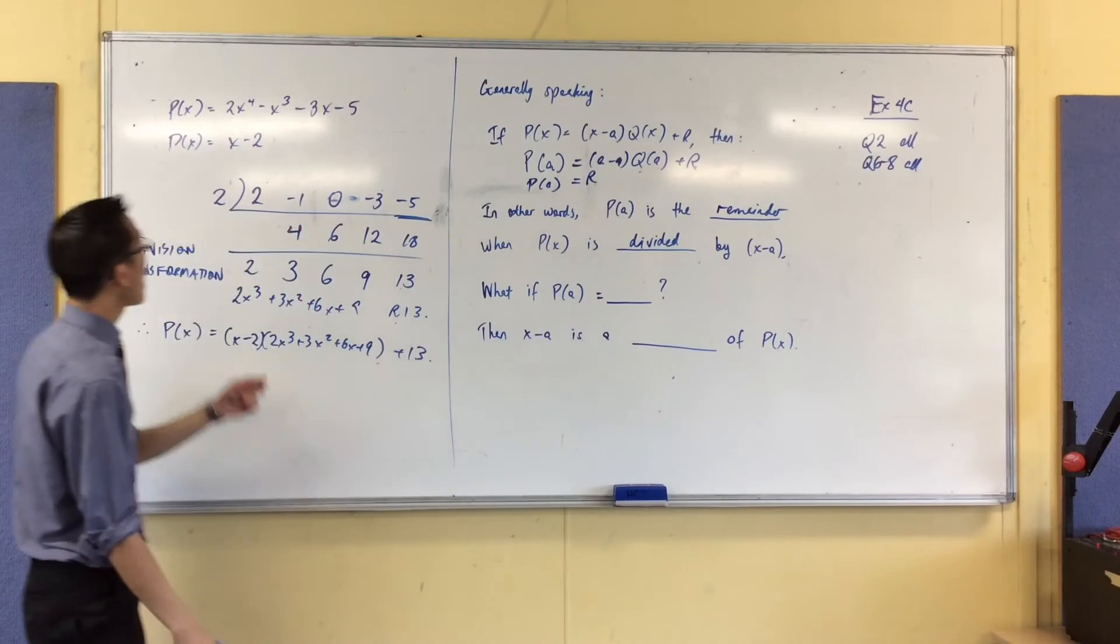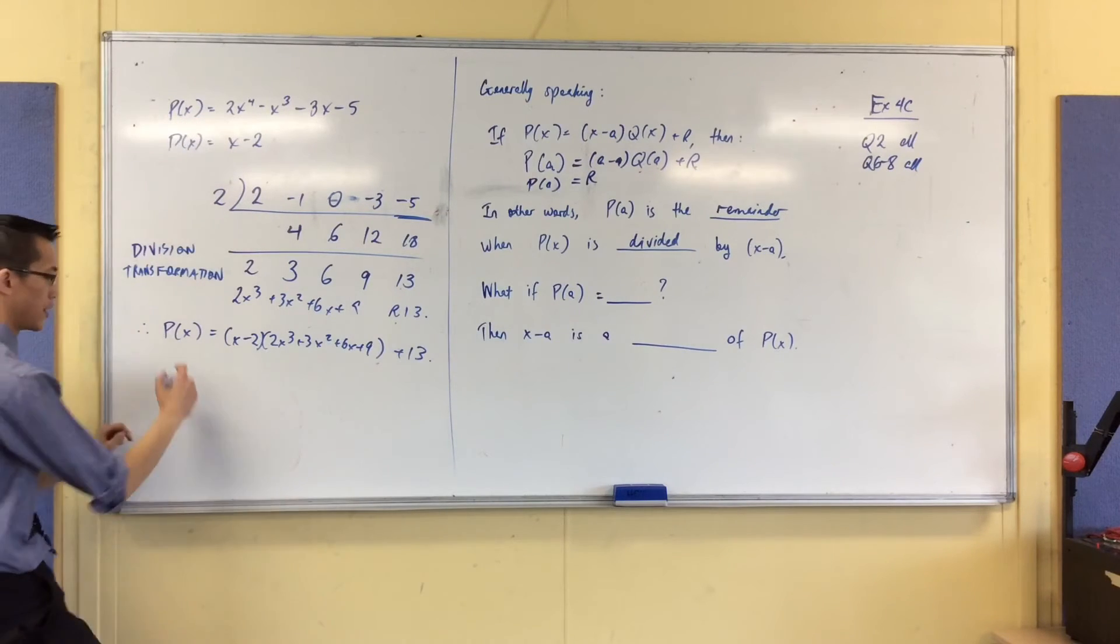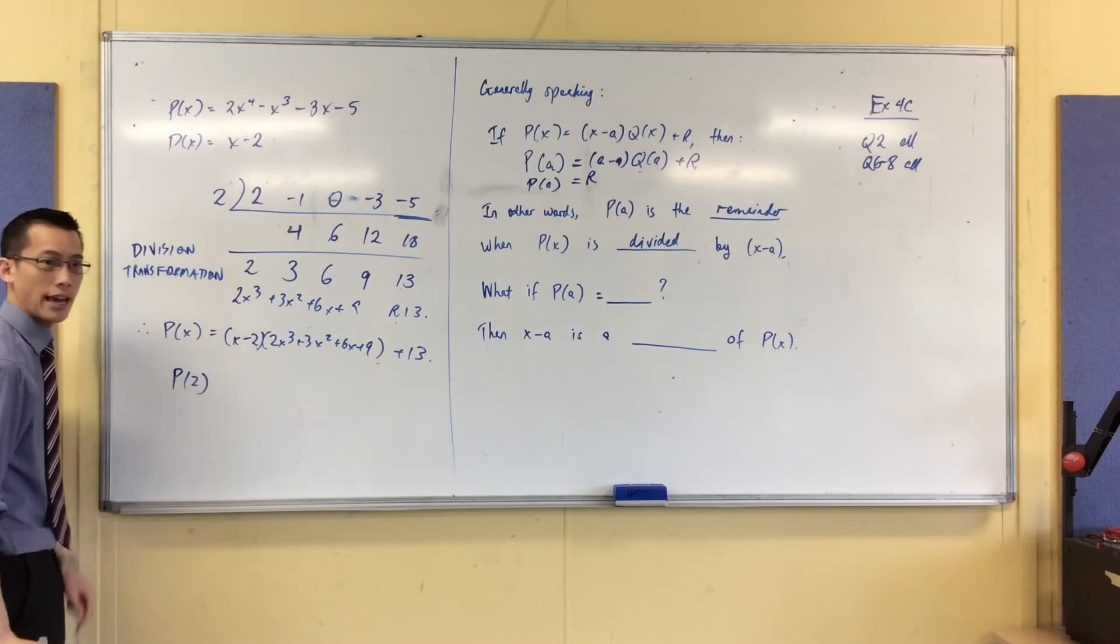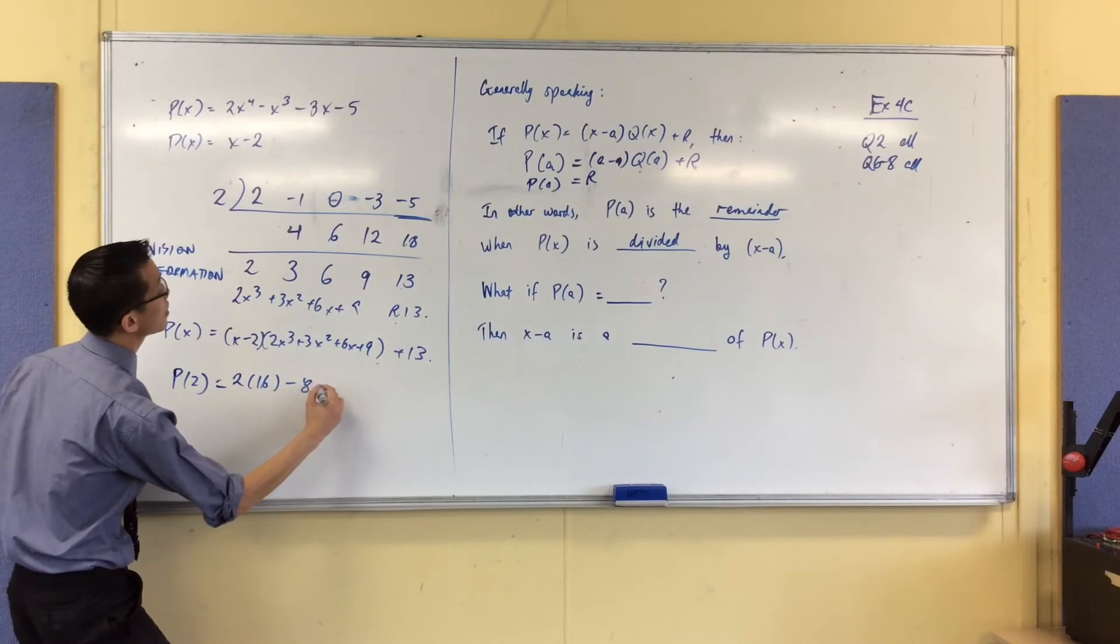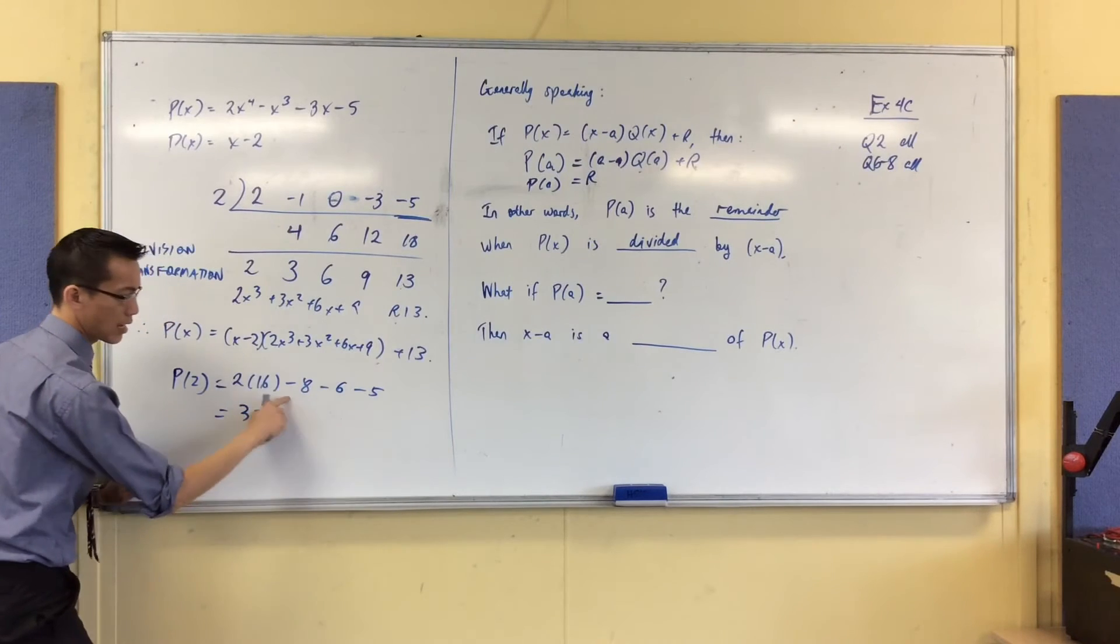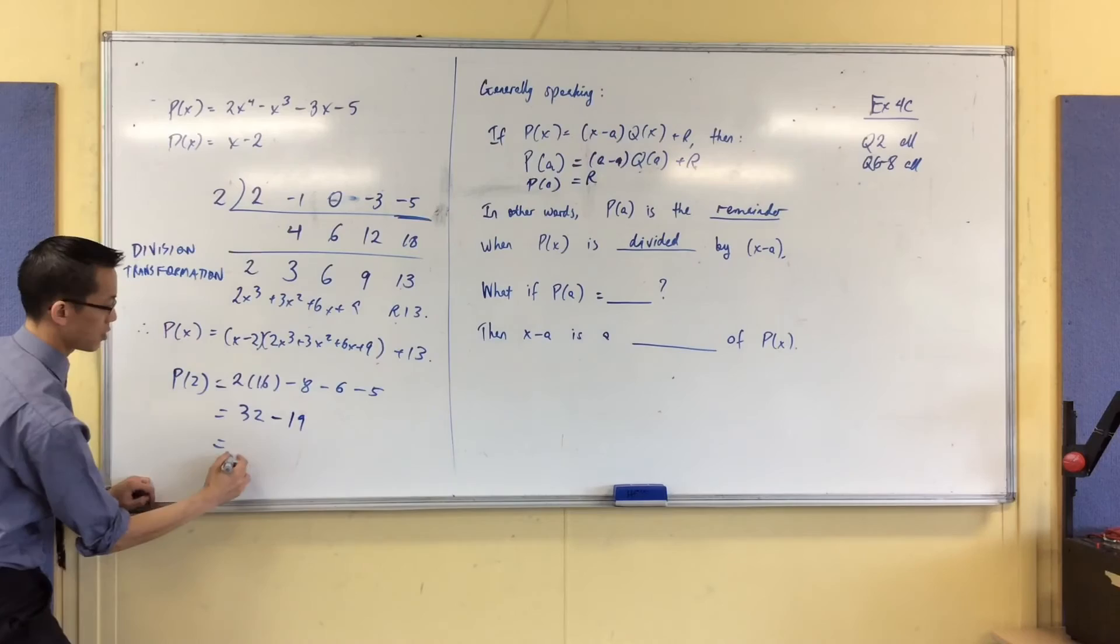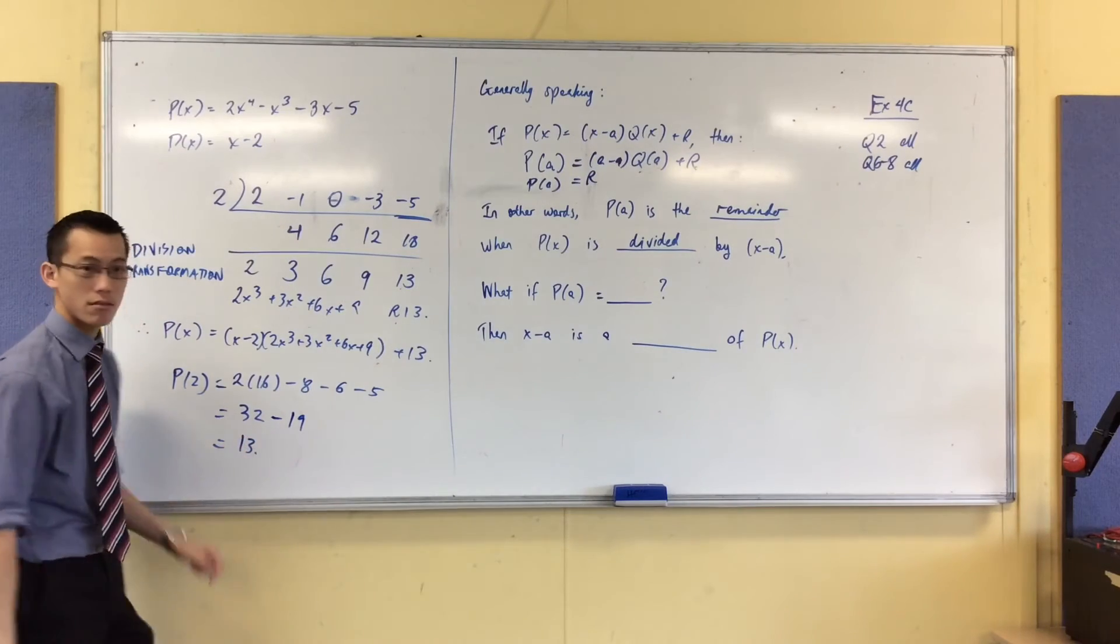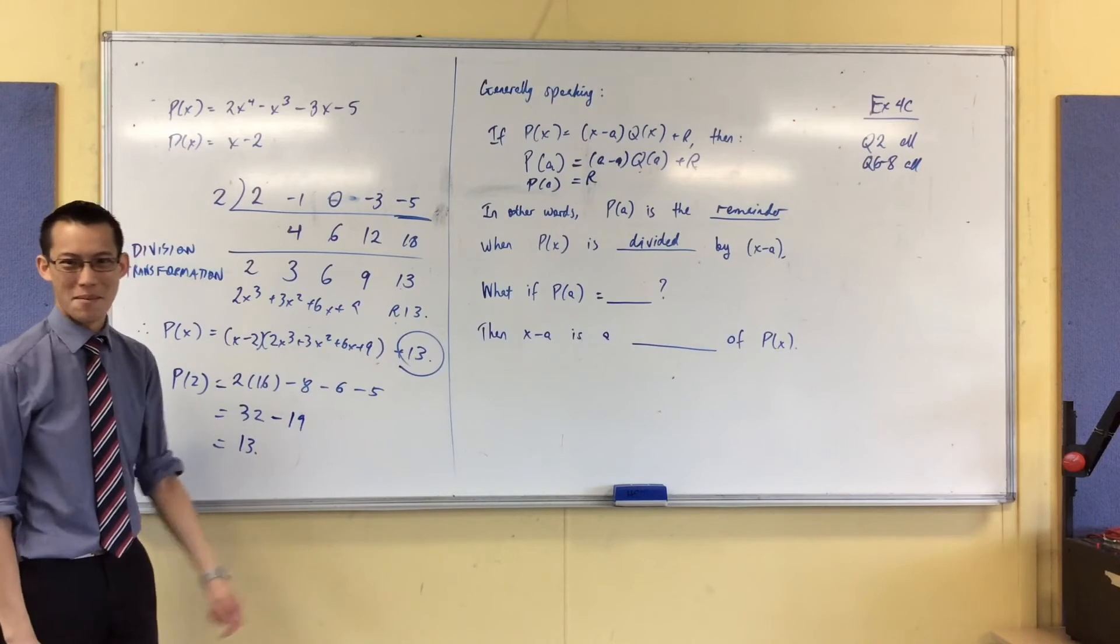If I divide by x minus 2, then if I were to go back to this original polynomial and say, well, what's P(2)? Let's actually just crunch this out. I'm going to get 2 times 16 minus 8 minus 6 minus 5. That's 32 take away, that's minus 14 minus 19, which is 13, which is the remainder that I got before. Always been a relief when my mental arithmetic works.